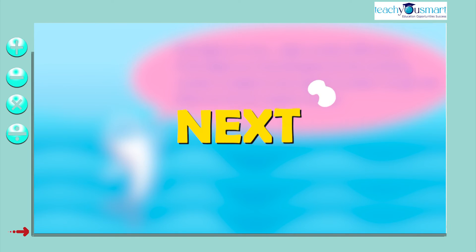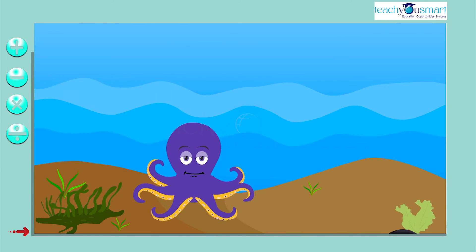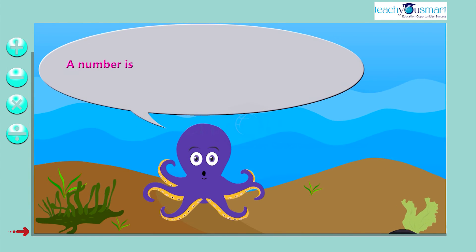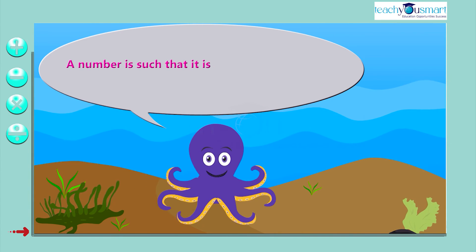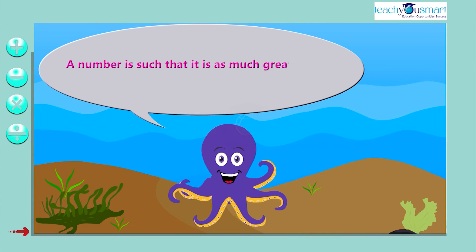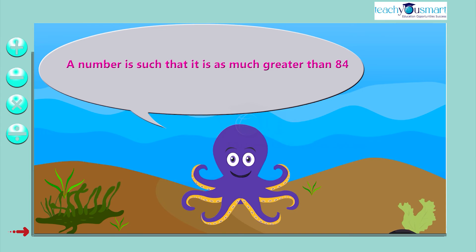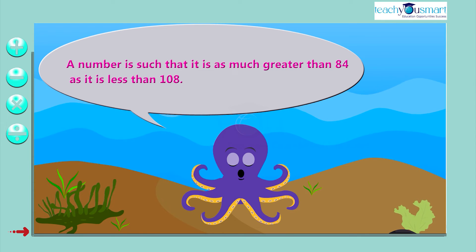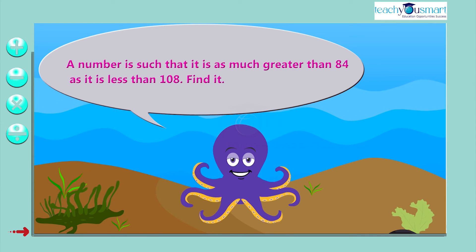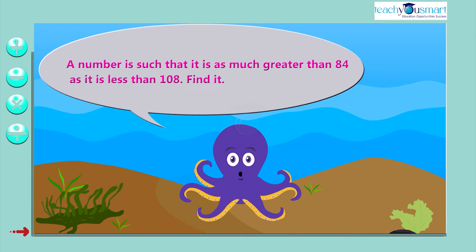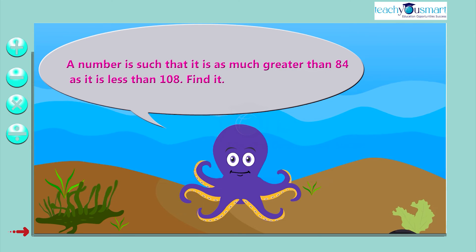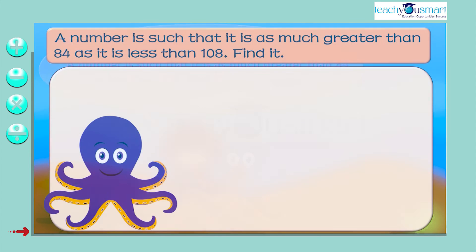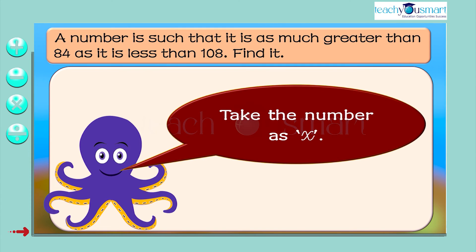Next, a number is such that it is as much greater than 84 as it is less than 108. Find it. Take the number as X.